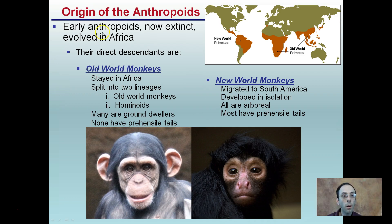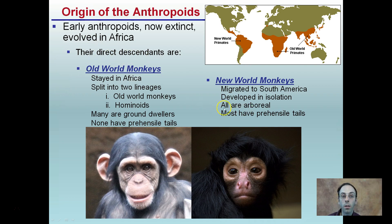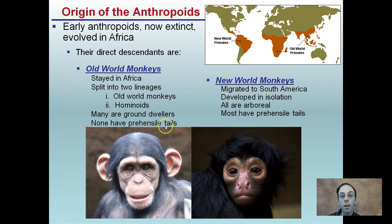Early anthropoids are now extinct and they evolved in Africa. Their direct descendants are Old World and New World monkeys. Old World monkeys are ones that stayed in Africa, split into two lineages — the Old World and the hominids — and are mainly ground dwellers that don't have a prehensile tail.